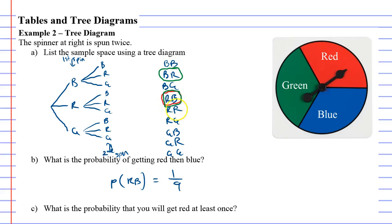Red then red - they got red twice, but we can circle that because it said at least once, meaning it could be more than once. We've got red then green, green then red. So it looks like we've got five ways we could get red at least once. So the probability of red at least once is five over nine, or 5/9.